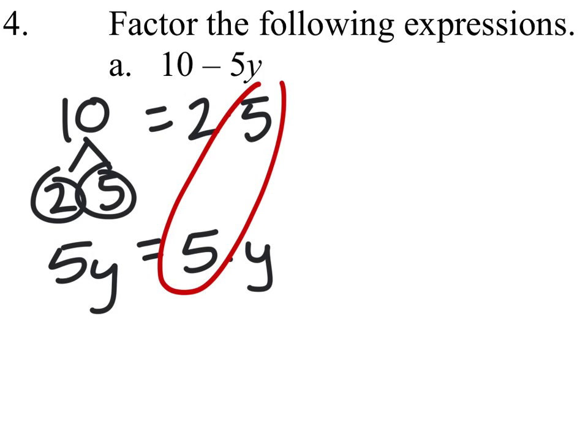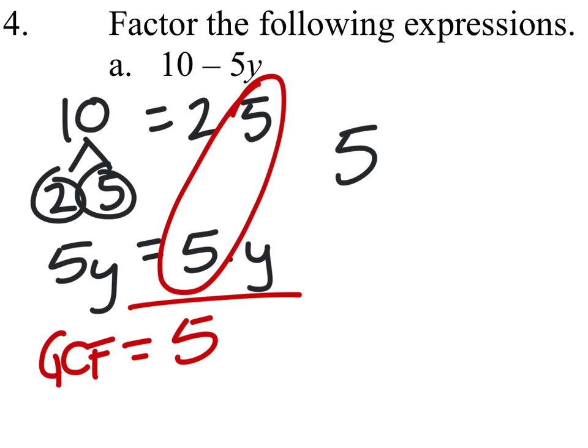So what are the common factors of these? 5. So this is our greatest common factor. Hopefully you guys remember this from class. So we know it's going to be 5, and in the parentheses we'd have the minus there from the original part.